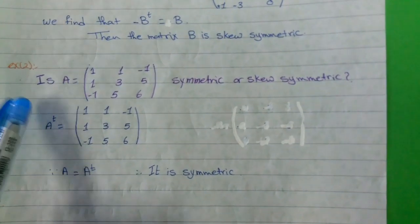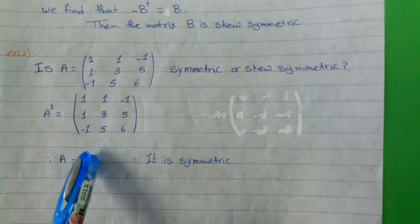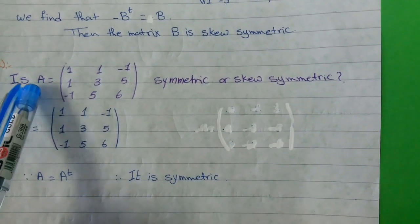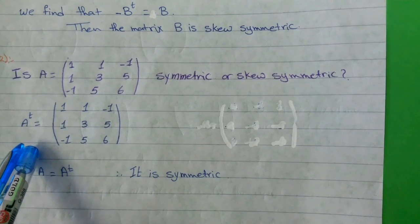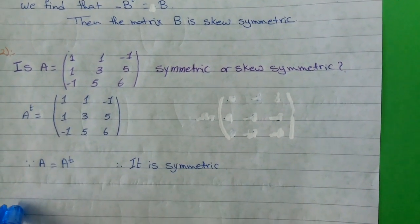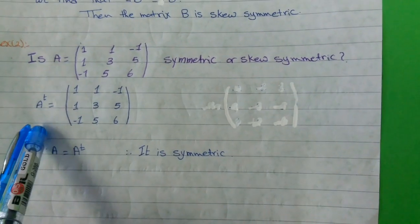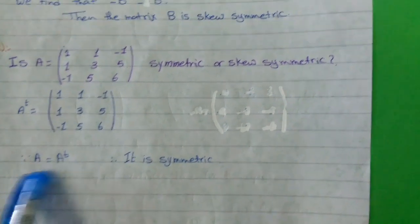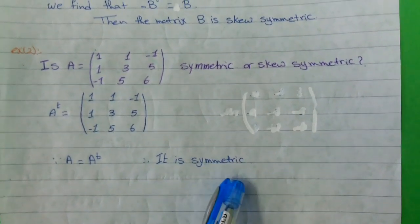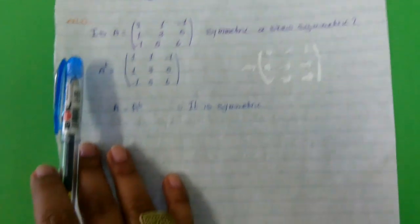For the symmetric example: given matrix A, we first find A-transpose. When we get A-transpose, we find that A equals A-transpose. So we do not need the second step of finding negative A-transpose, because A equals A-transpose means the matrix is symmetric. Now we finish lesson one; tomorrow we will take lesson two.